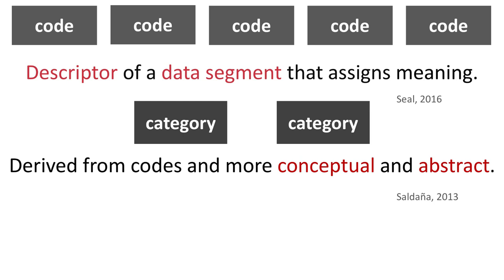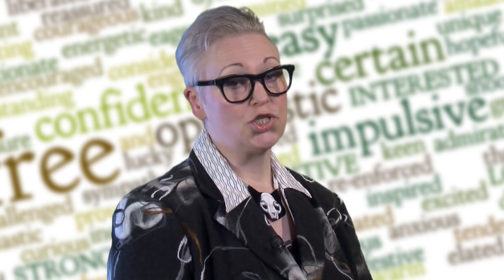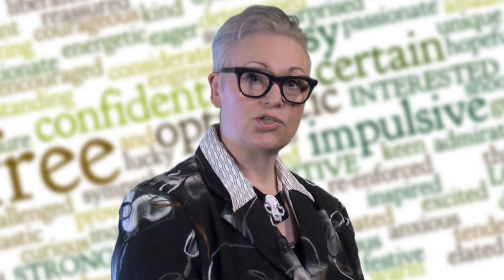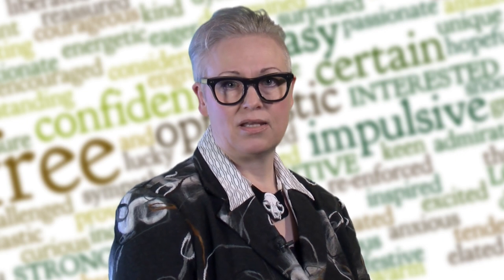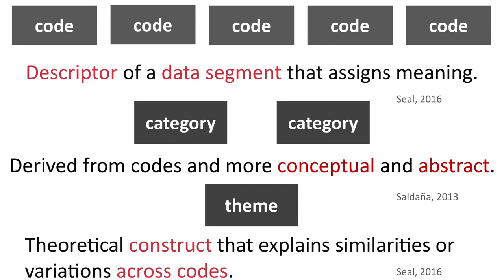I don't want to worry anyone with the 'no one meaning' angle, as there are techniques that help you find your path, such as the very important one of writing analytical memos — the handout has more on this. As an example for categories, let's take the 'teacher resignation' code from earlier. You might also have 'teacher joy' and 'teacher striding,' and all of these might be put together under the 'teacher behavior' category. As for themes, which develop out of the patterns, Seal sees them as theoretical constructs that explain similarities or variations across codes.